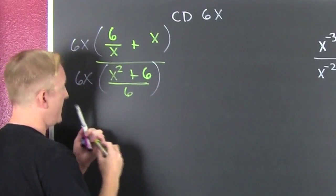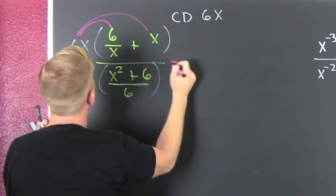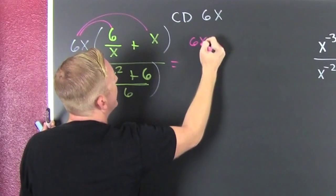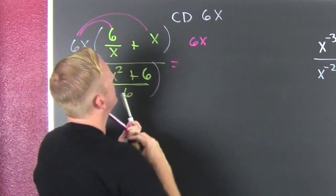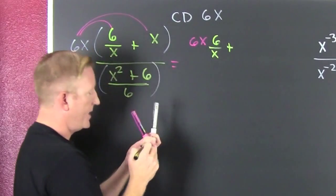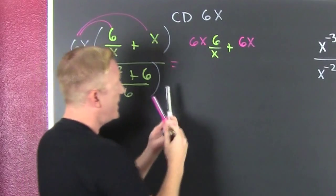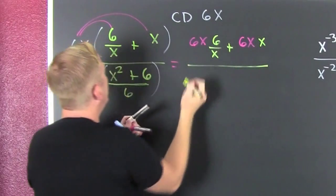So then that's a 6x times a 6 over x plus a 6x times an x. And then that's all over...